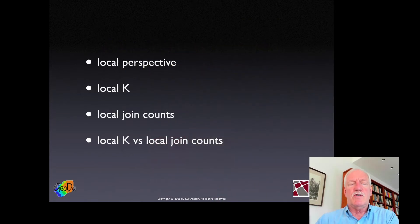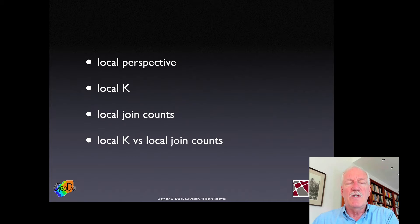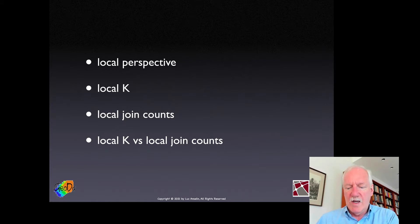As a refresher, I'll reiterate because this was covered at length in the intro spatial data science course. What I mean by the local perspective, then outline the local version of the K function and its counterpart in a lattice setup, which is the local joint count statistic, and then close with a brief comparison of the two on the Snow data for cholera in London.